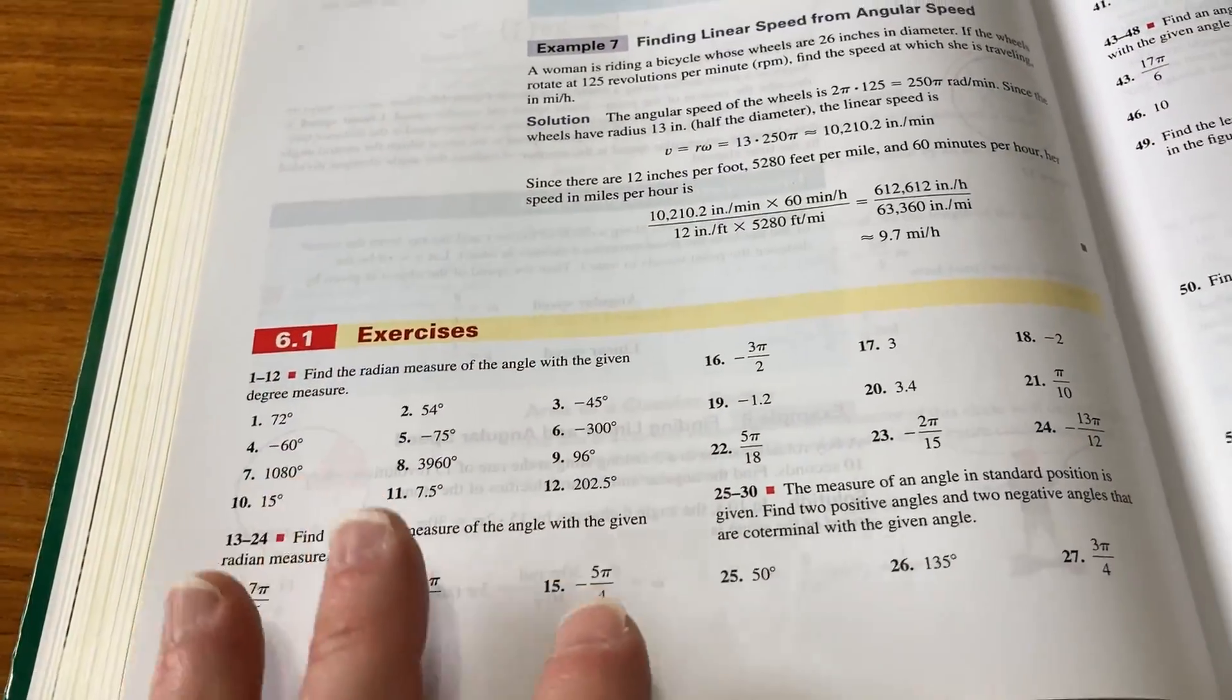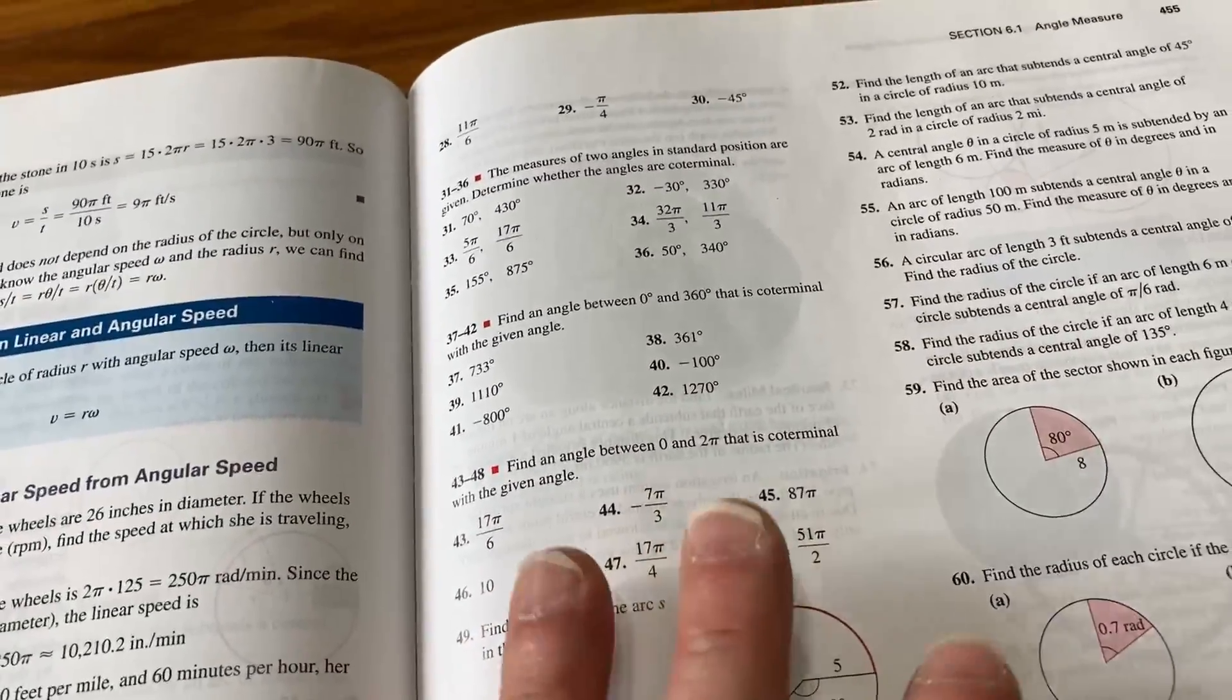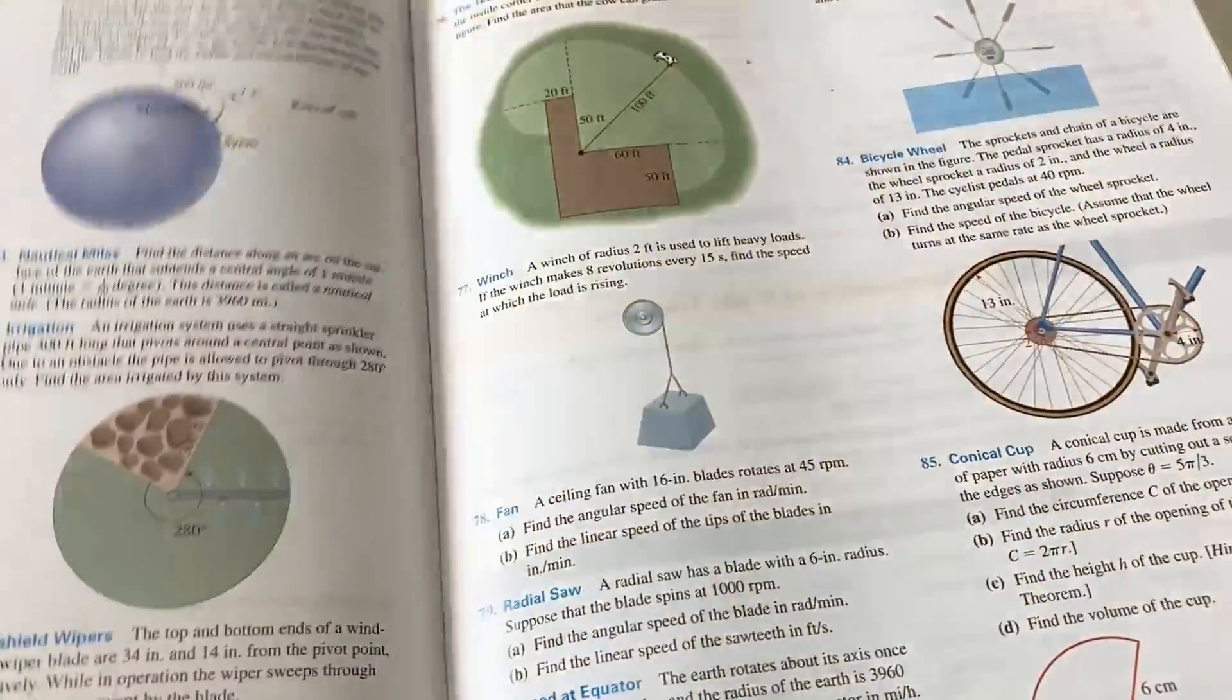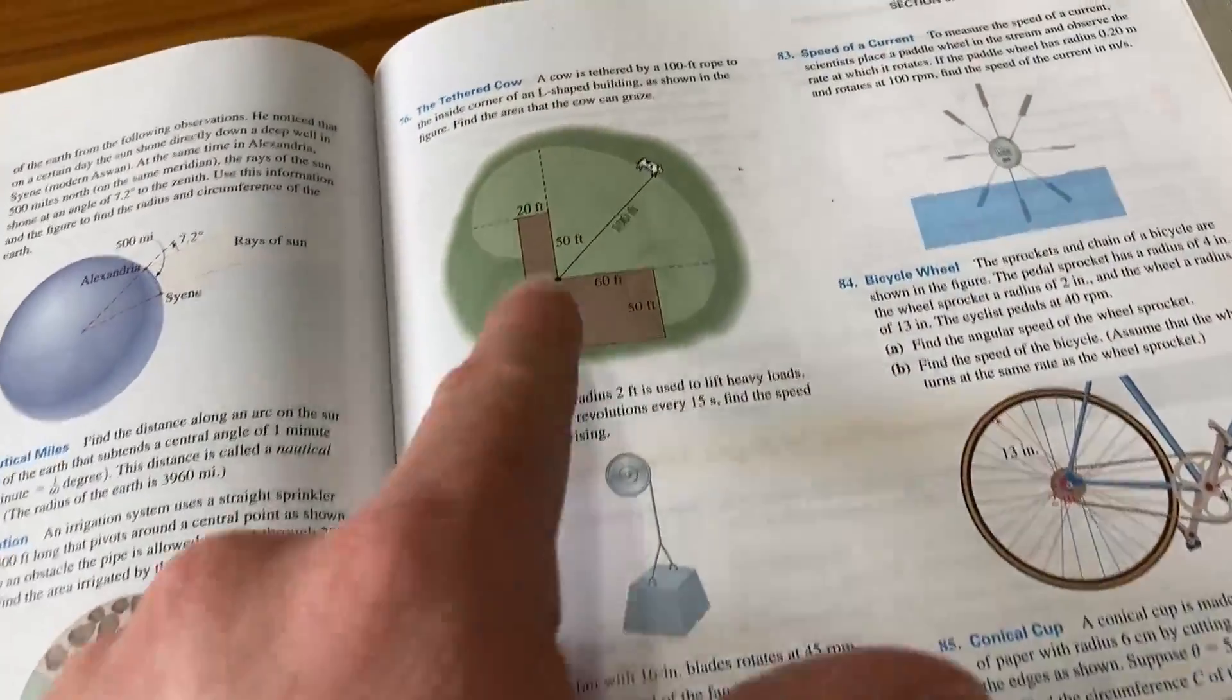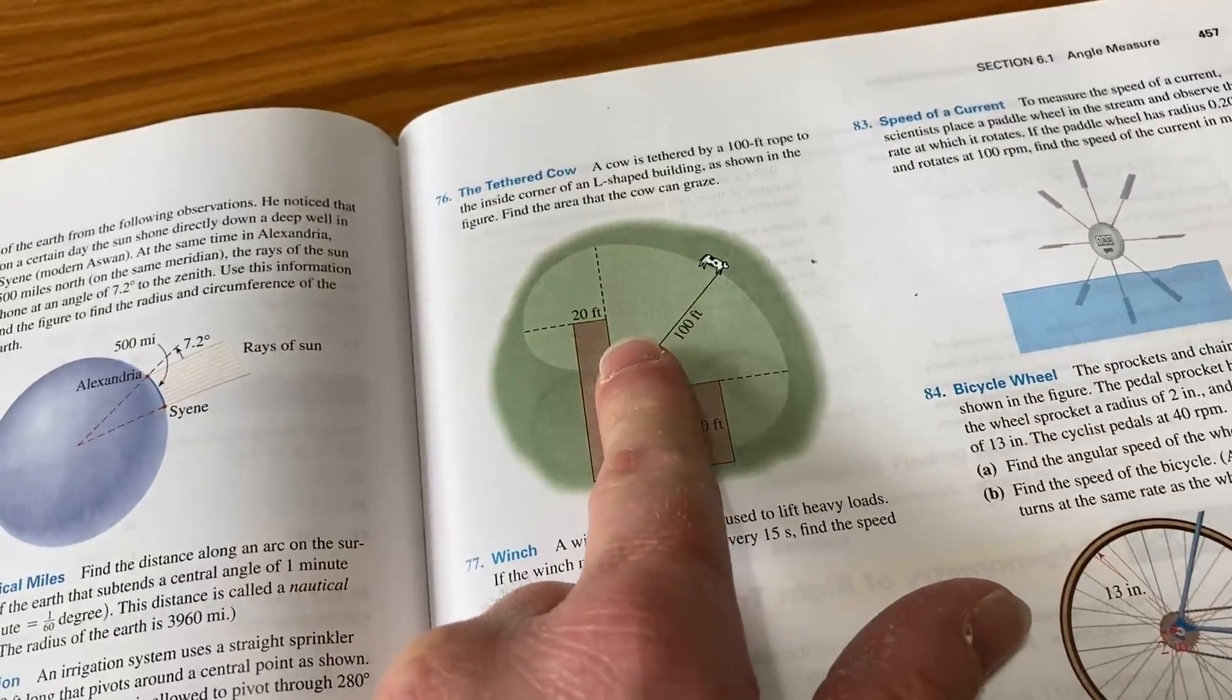So you can check your answer in the back of the book, which is awesome. Then you just keep going and you keep doing that for all of the problems. And again, you're going to run into situations where you get to problems that don't have examples in the book. For example, I'm sure some of these word problems are not in the book like that. The tethered cow, I doubt there's an example of that in the book.